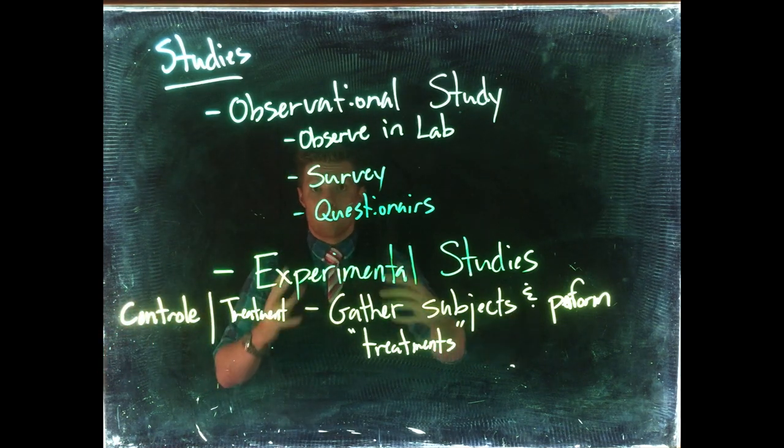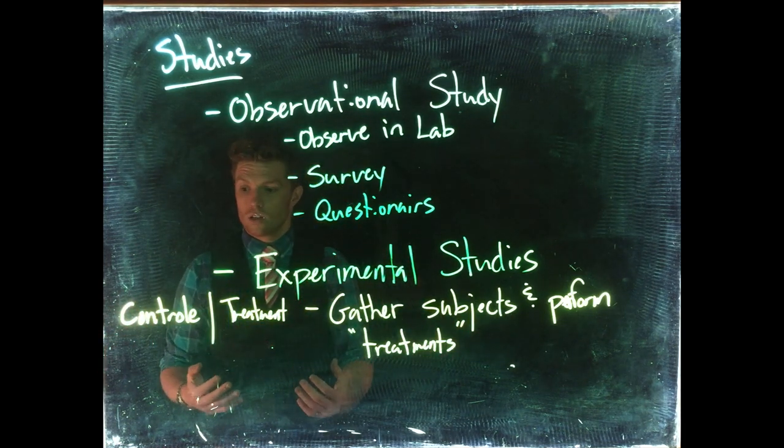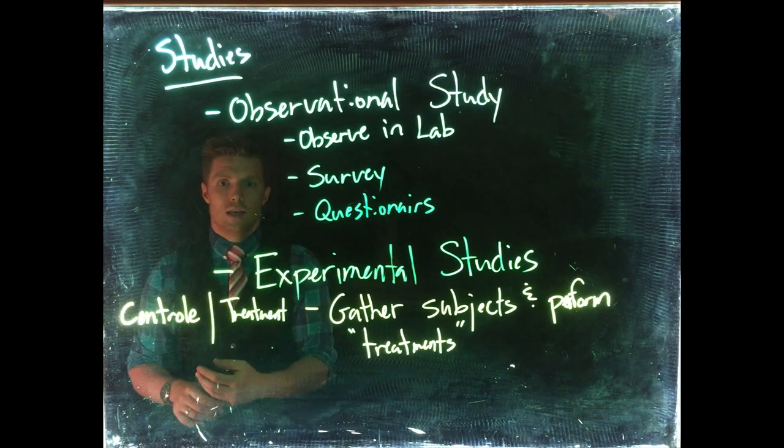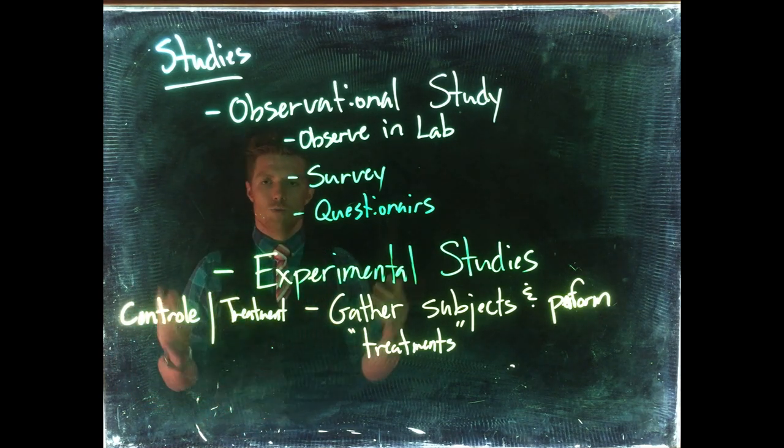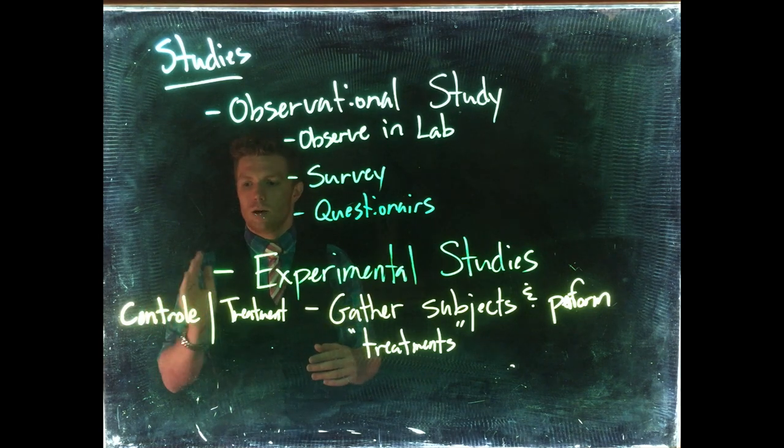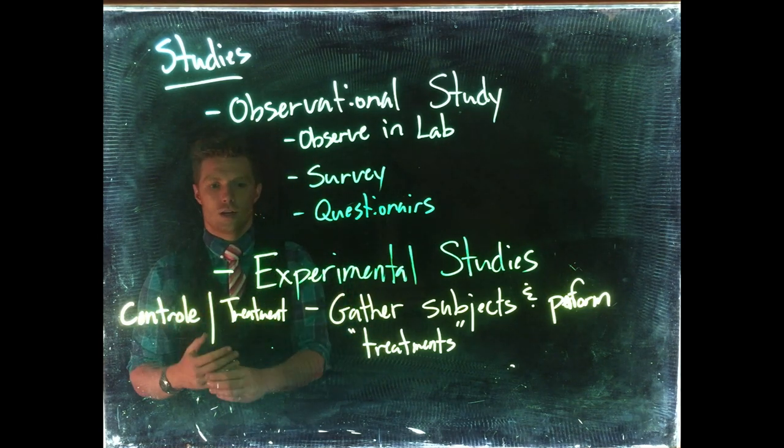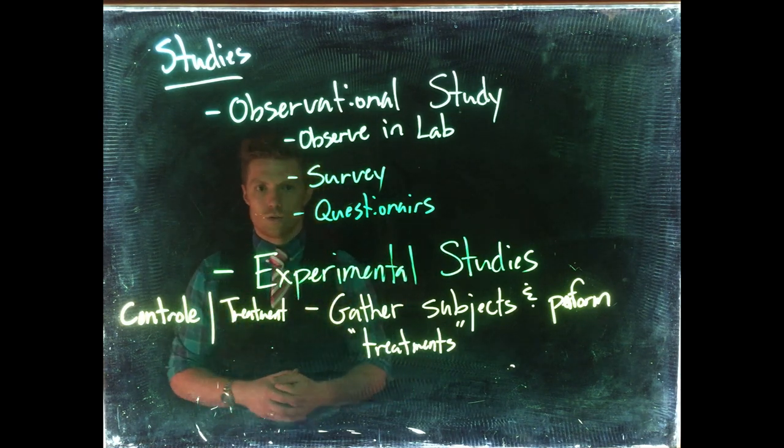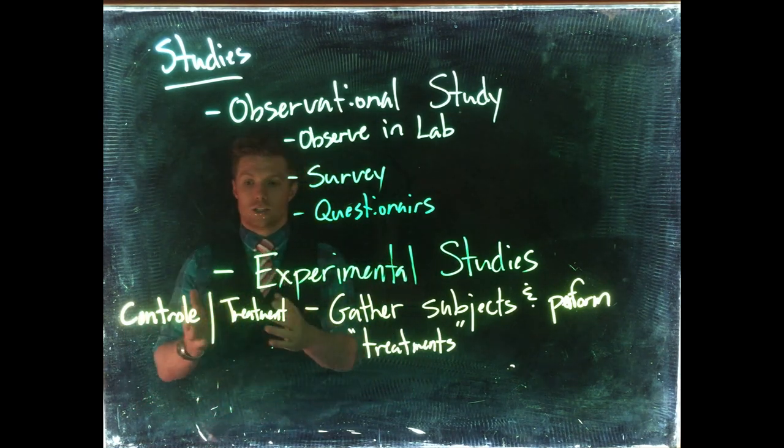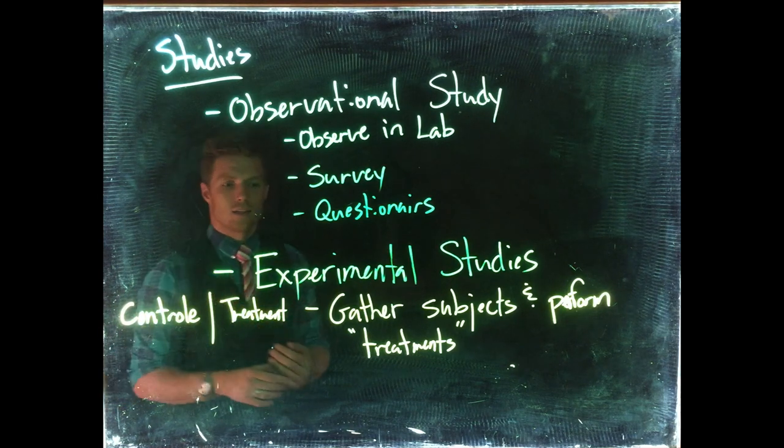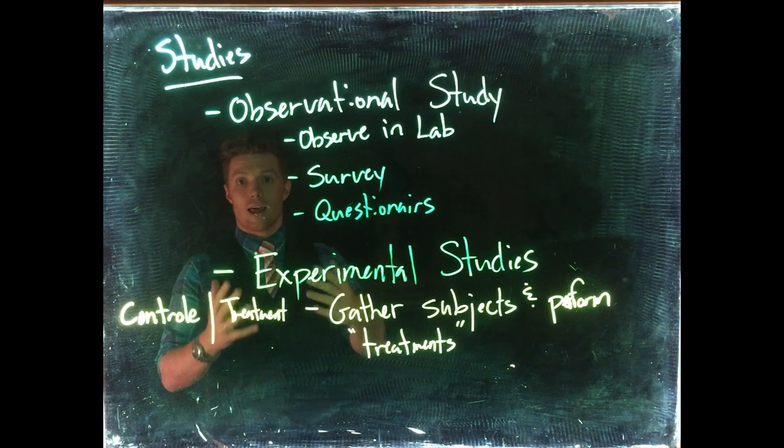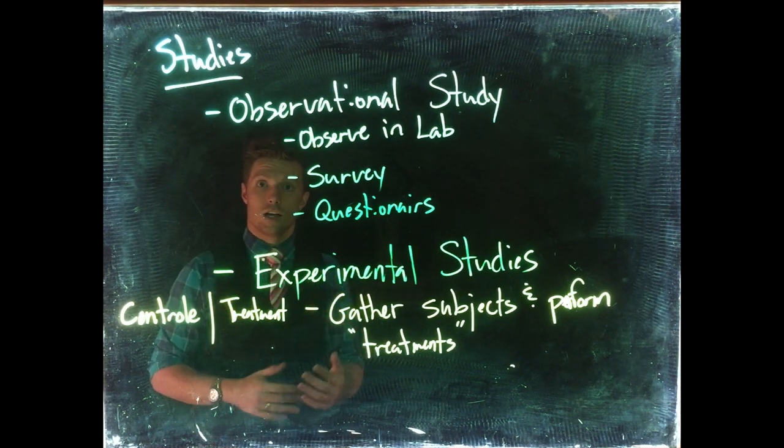Here we can actually say that as we ran this experiment, we saw that the control group did not perform as well. Maybe we're trying a new painkiller, and the placebo was less effective at treating pain than the new pain medication. This could help get through the FDA, and we can actually assign cause and effect. Experimental studies are really important because we can make those conclusions of cause and effect.